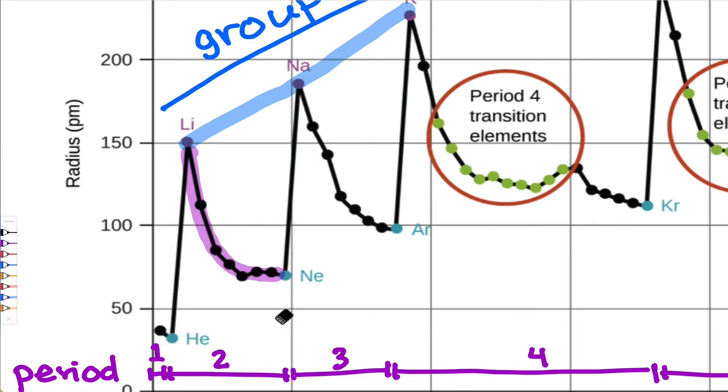Atomic radius decreases as we move left to right across a period. So period one, even for hydrogen and helium, the trend holds. Period two, starting with lithium and moving across to neon, that radius decreases. And that same trend is observed across each period.